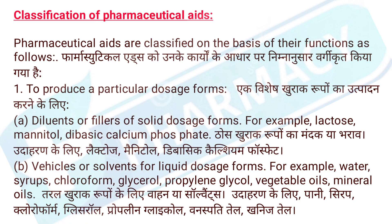1. To produce a particular dosage form. A. Diluents or fillers of solid dosage forms. For example, lactose, mannitol, dibasic calcium phosphate. Thos khuraak rupo ka manda kiya bharav, udaharan ke liye, lactose, mannitol, dibasic calcium phosphate.